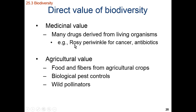Another agricultural value of biodiversity is that we can have biological pest controls. Earlier in this chapter we talked about how ladybugs can be used to eat aphids and reduce damage to crops. We also have wild pollinators — not just honeybees, but many moth species, bird species, and flies that help to pollinate our agricultural crops.